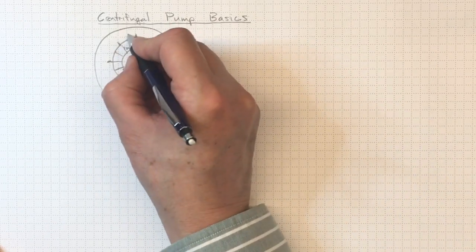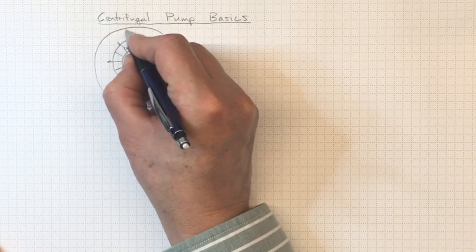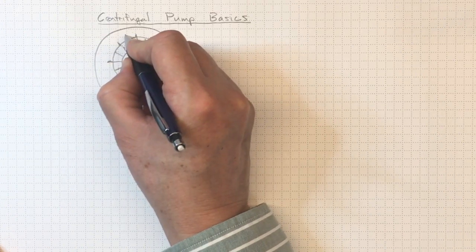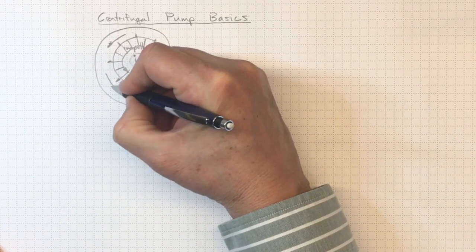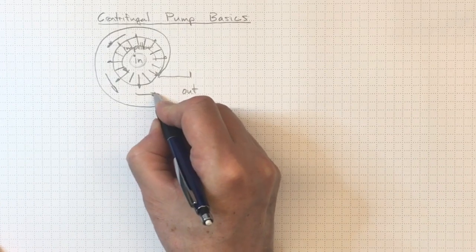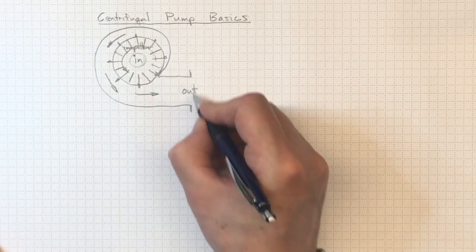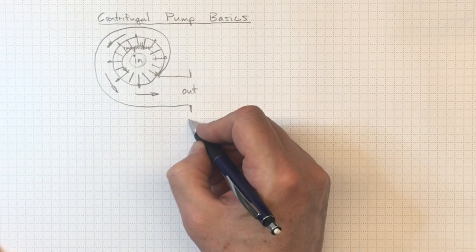And because the impeller is rotating, once it gets to the end here, relative to the fixed casing, the fluid is actually moving in this direction, around and out the discharge of the casing.